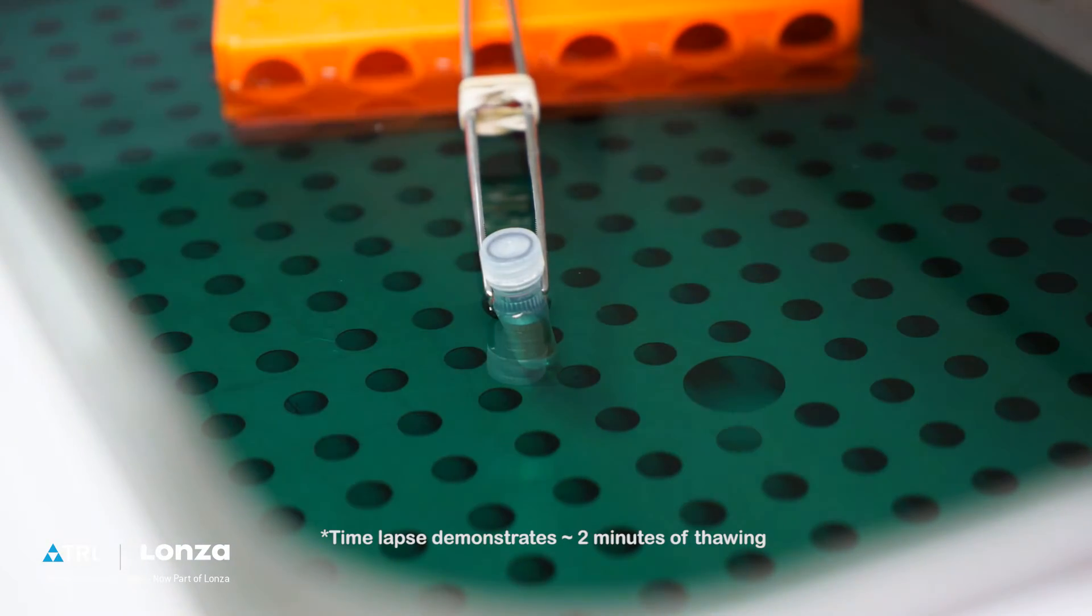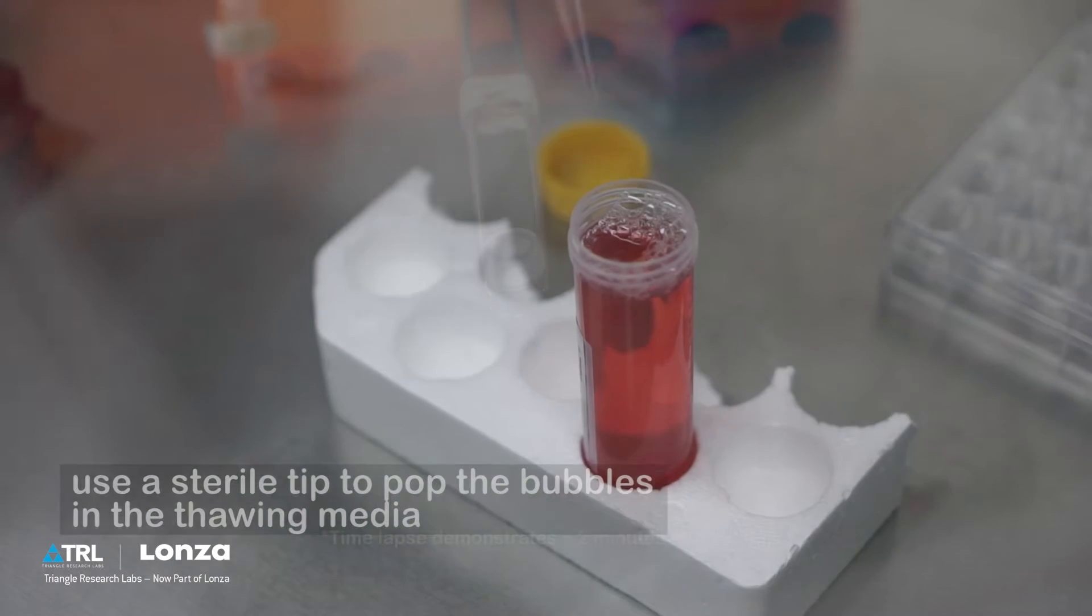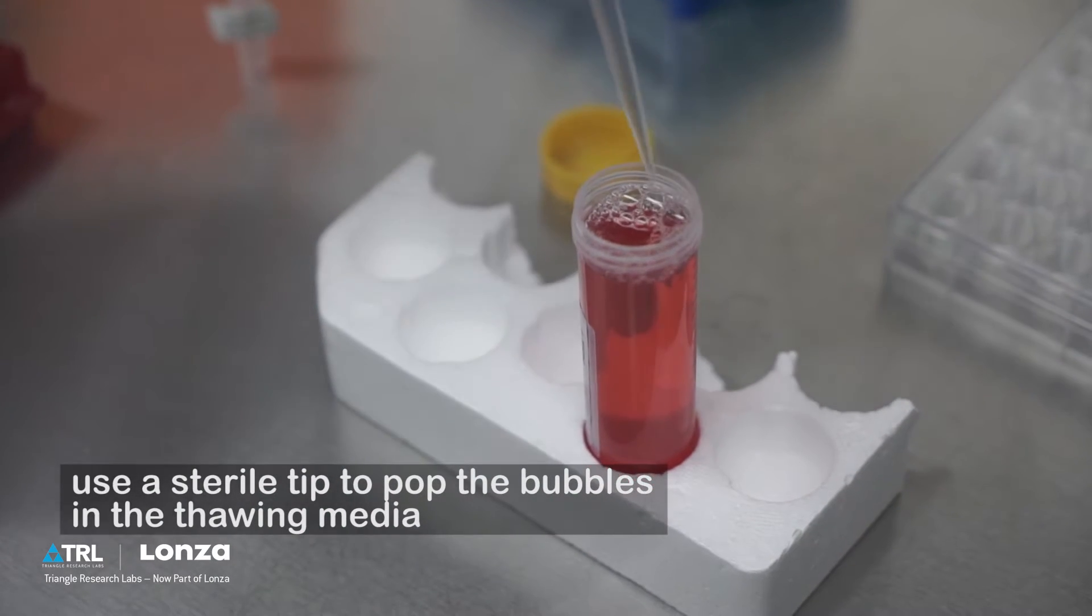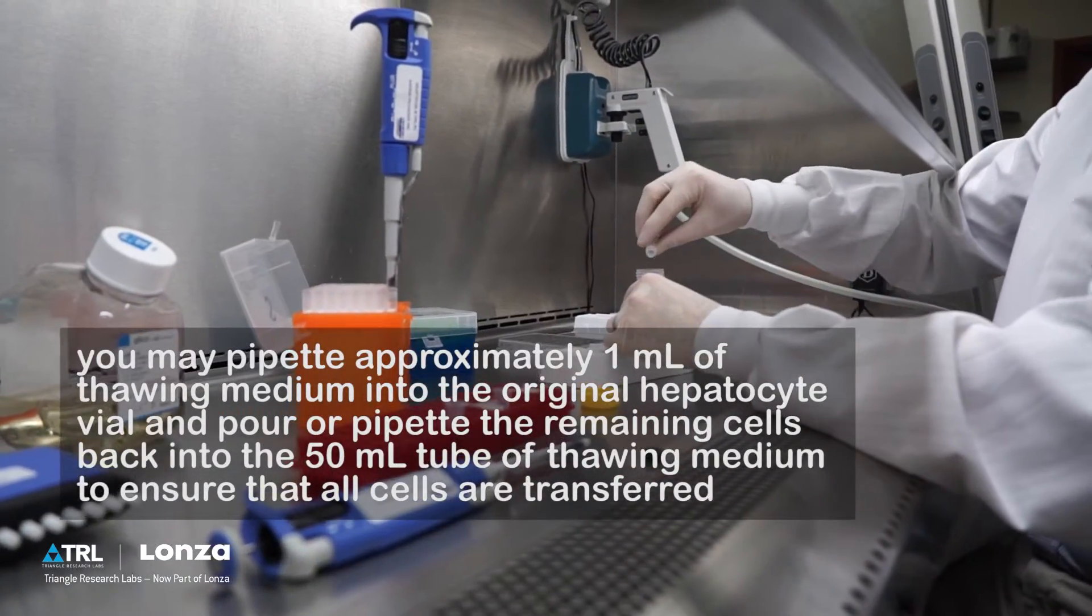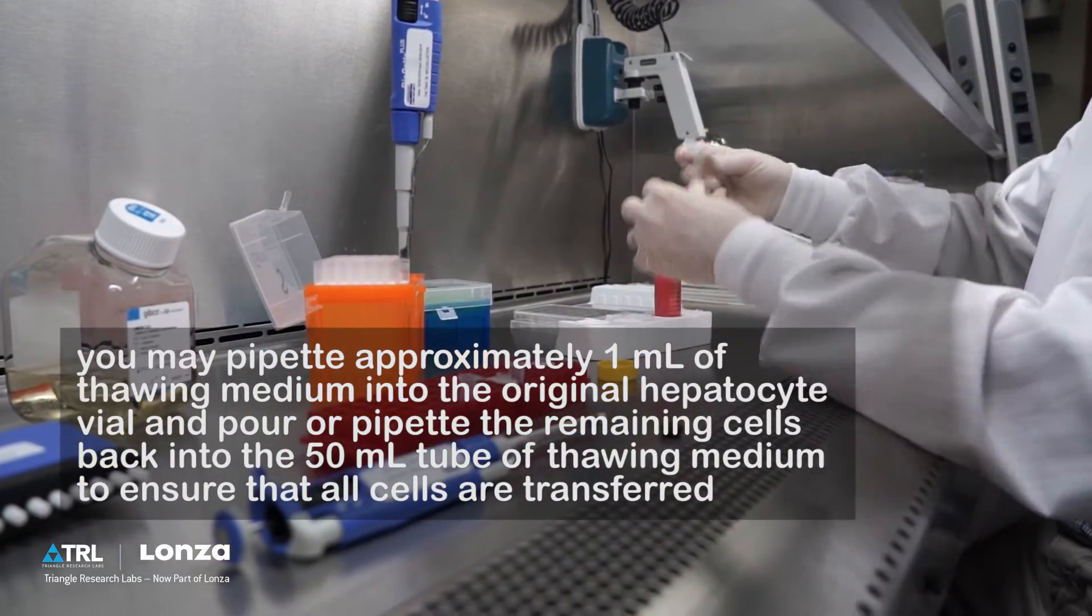Once thawing is complete, disinfect the vial with ethanol and transfer it to the biological safety cabinet. Prepare thawing medium for hepatocytes by popping any bubbles that may have formed. Pour hepatocytes into a 50 milliliter conical tube of thawing medium.